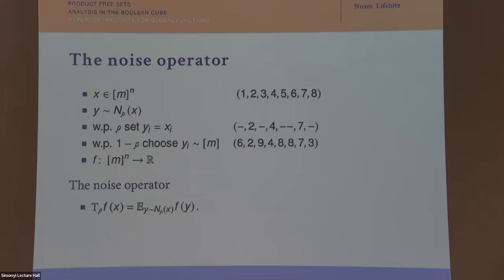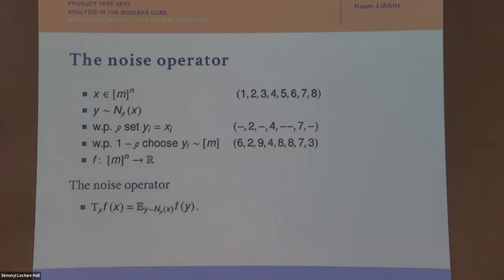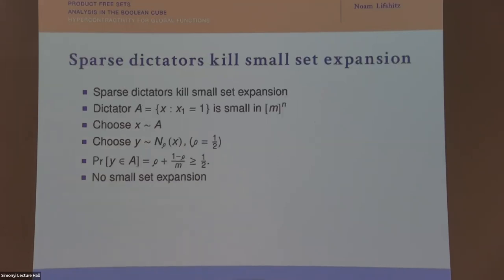Low-degree functions are no longer smooth in other settings. Let's also discuss small set expansion in these other domains and show that it fails as well. The noise operator is defined the same way: given x, we take a noisy version by with probability ρ remembering the coordinate, and with probability 1−ρ forgetting it and resampling uniformly from {1,...,m}.